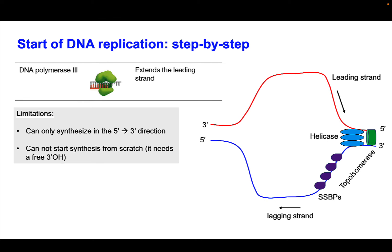The other limitation of DNA polymerase is it cannot start synthesis from scratch. Recall that these polymerizing strands need a free 3 prime hydroxyl. If a chain terminator is incorporated — like AZT or the ddNTPs we were using for sequencing — DNA synthesis will halt. So we need to find a way to incorporate a 3 prime hydroxyl on a daughter strand so that DNA polymerase can act.